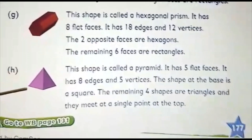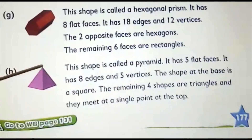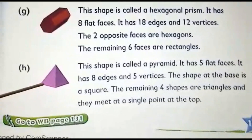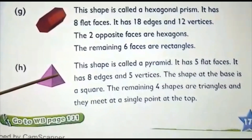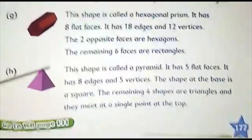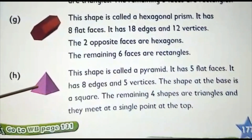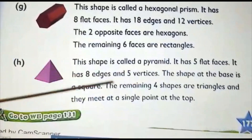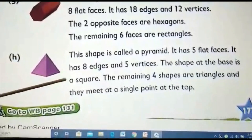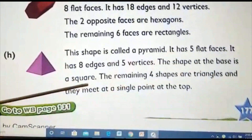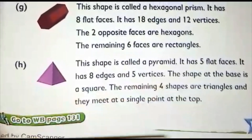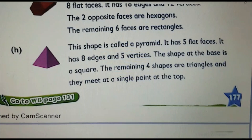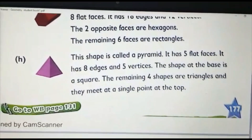The last shape is pointed, so it is a pyramid. It rests on a square base — counting the sides: one, two, three, four — so it is a square pyramid. It has five faces, eight edges, and five vertices. The four triangular faces meet at a single point at the top.